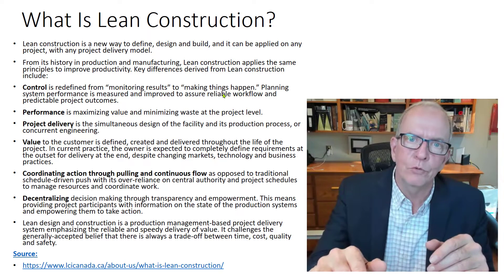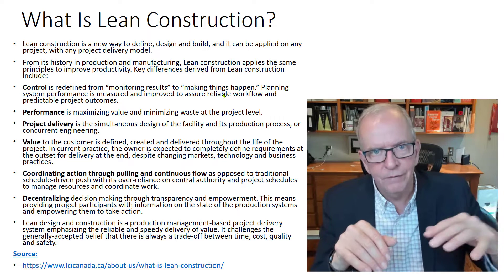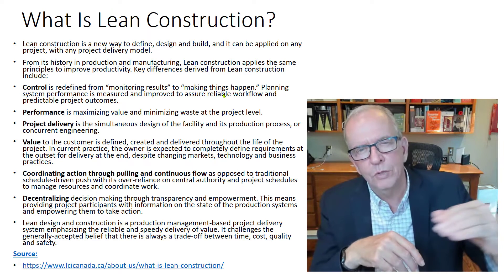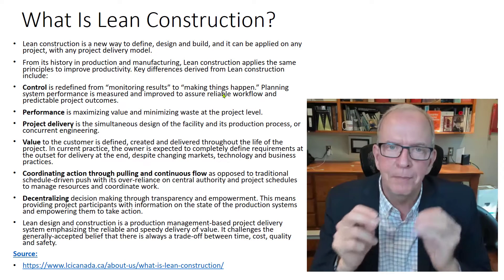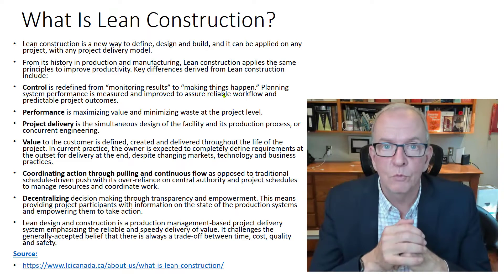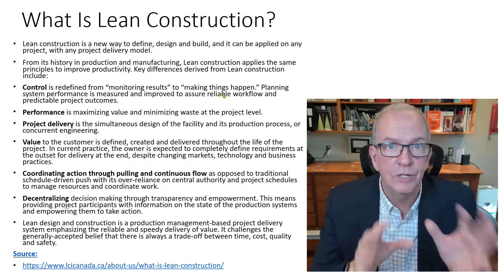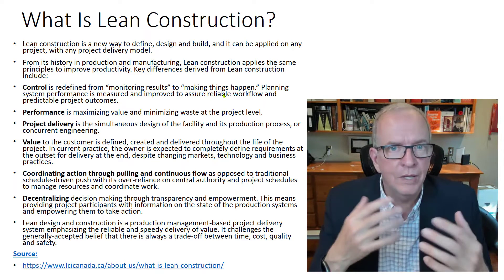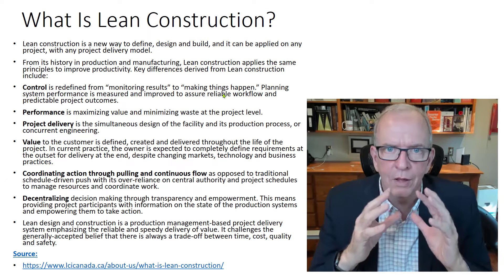We try to identify obstacles — what we call constraints — so we can remove them and the project flows better. Lean uses the analogy of a river with rocks in it: the rocks impede your flow and you're trying to remove them so the project moves much more smoothly. That requires systems that get strong commitments — it's a commitment-based, engagement and collaboration system — which is great because we really need to utilize the people and talents on our projects.